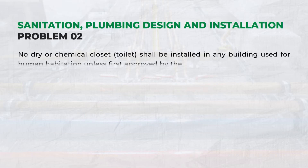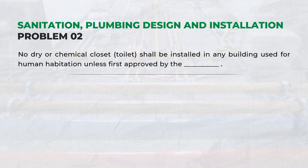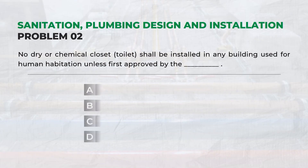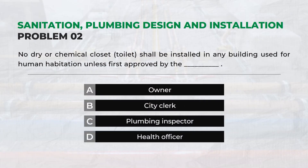No dry or chemical closet shall be installed in any building used for human habitation unless first approved by the — Answer D: Health Officer.